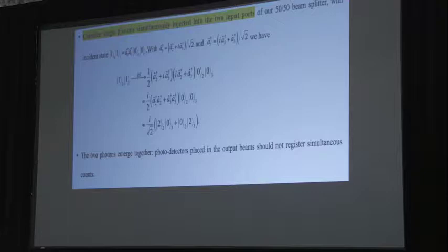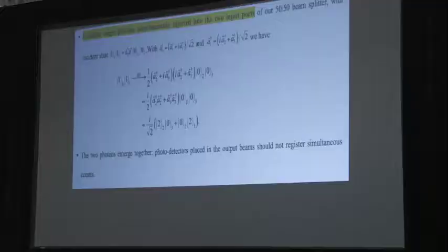What happens if you put a single photon in each of them? So I've got two modes, each with a single photon, guaranteed from one of these gadgets. Beam splitter 50-50. What comes out the other end? Well it's either all in one or all in the other, but not one and one. The two photons emerge together.